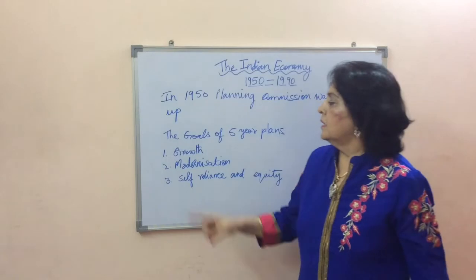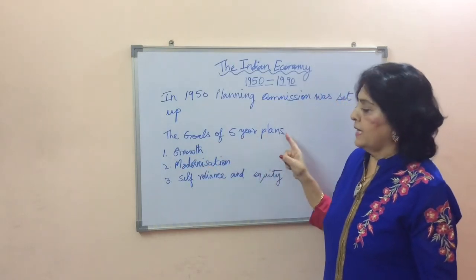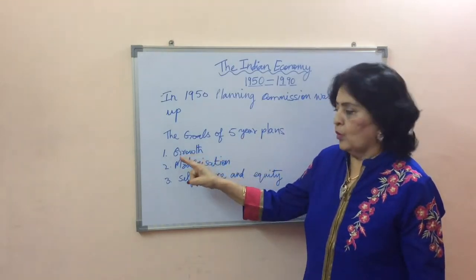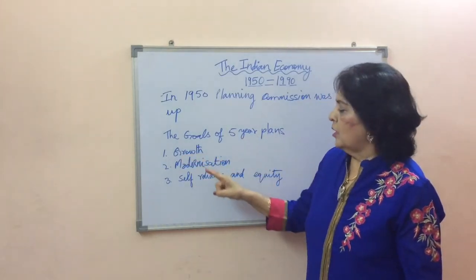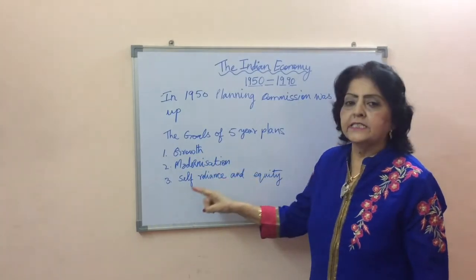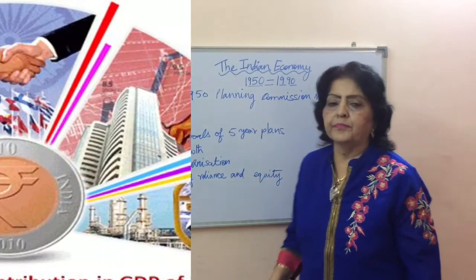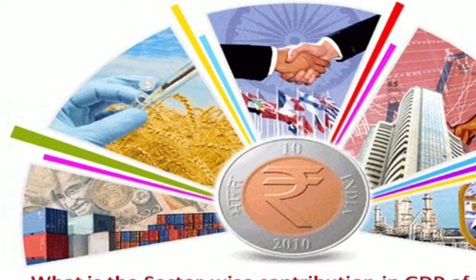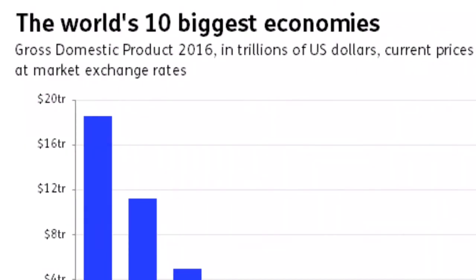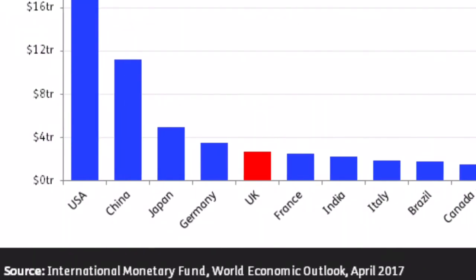The goals of the five-year plans are growth, modernization, self-reliance, and equity. GDP, that is Gross Domestic Production, is an indicator of the development of the economy of the country. The graph shows the ten biggest economies of the world.